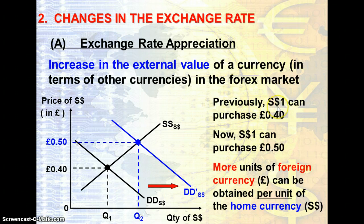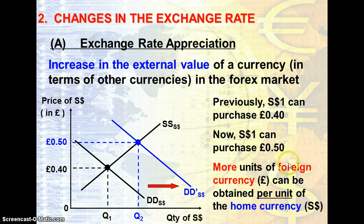Previously, Singapore one dollar could actually purchase 0.40 cents in pounds. Now one dollar can purchase more pounds. So more units of foreign currency can be obtained per unit of the home currency — in this case, we are looking at one unit of Singapore dollars.